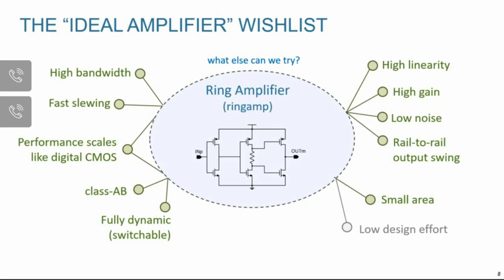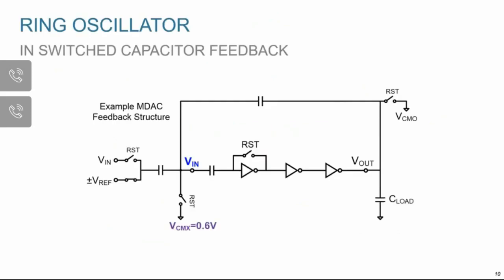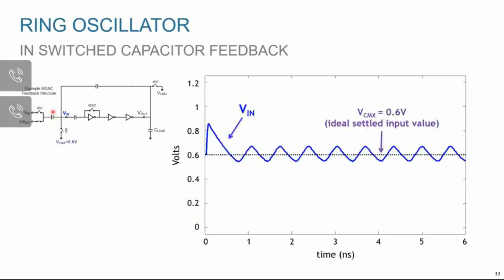In this talk I'm going to try to give you an idea of what exactly a ring amplifier is, how it works, why it works so well, how to design one, and how to develop a ring amp topology best for your application. To begin, consider what happens if we put a three-inverter ring oscillator into a switched capacitor feedback structure. There's a reset switch and a capacitor, and during reset this will store the input-referred offset of the first stage inverter onto the capacitor such that the trip point of the three-inverter ring oscillator will be approximately VCMX, or 0.6 volts in this example.